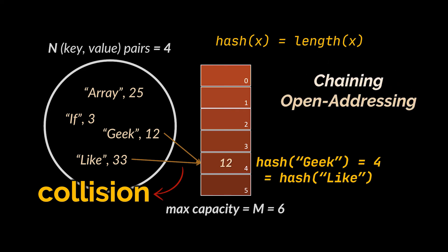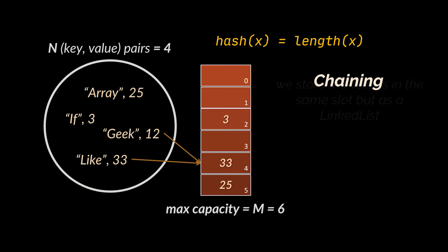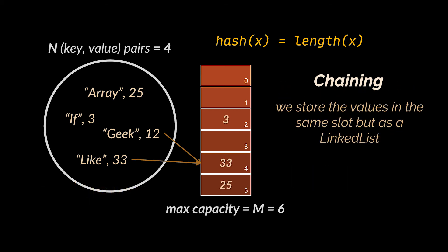Collisions can be resolved using chaining or open addressing. Let's further discuss these two techniques. In case of chaining, if our keys were mapped to the same index what we do is store both these values in the same slot of the array but as a linked list, hence the name chaining. We will chain them one after the other. So in our previous example, the value having 'like' for key will be inserted next to the value having 'geek' for key in the linked list sitting at index 4.